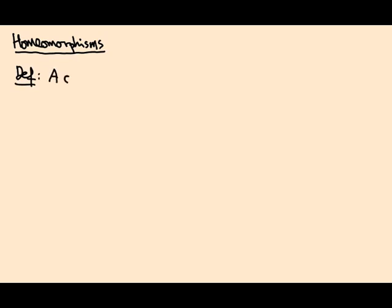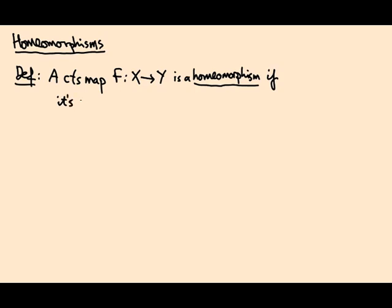A continuous map f between two topological spaces X and Y is a homeomorphism if it's invertible, bijective, and its inverse f inverse is also continuous.